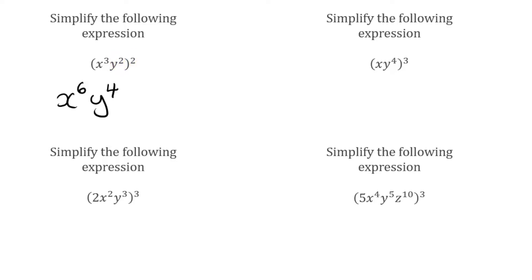Looking at this next question, we've got x y to the power of 4, all cubed. x is x to the power of 1, raised to the power of 3: 1 multiplied by 3 is 3, so that's x cubed. Then y to the power of 4 raised to the power of 3: 4 multiplied by 3 is 12, so that's y to the power of 12. That's that one fully simplified.